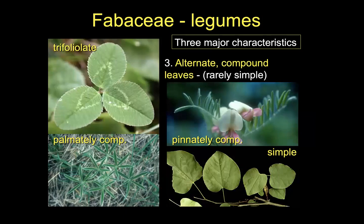For the most part — and there are always exceptions — these are compound leaves and alternate, never opposite. Some are simple, including the redbud, which is a beloved tree of North America that actually has simple leaves. But most of our herbs are going to be some form of compound: trifoliate like clover, pinnately compound, or palmately compound like the lupine that we'll see.